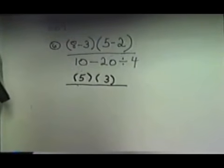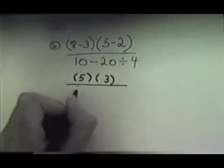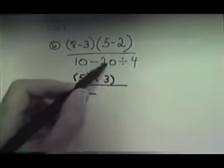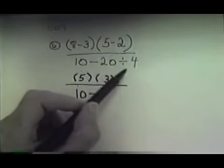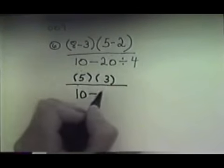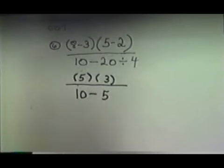Okay, I don't have any grouping symbols on the bottom. I don't have any exponents. So I'm supposed to multiply and divide from left to right. So if I do that, I have some dividing over here. So I copy down 10 minus, and I come over here and do this dividing. 20 divided by 4. That would give me 5. So I write that down.